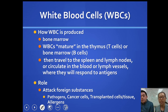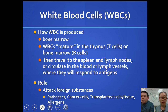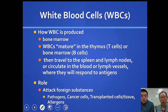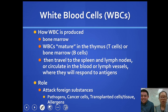White blood cells are always produced in the bone marrow, just like red blood cells, but they go through a different maturation process. B cells stay in the bone marrow to mature, while T cells mature in the thymus. After maturation, they travel to the spleen and lymph nodes, or circulate in blood and lymph vessels, looking for pathogens or bacteria to attack. Their role is to attack foreign substances — not just bacteria, but also transplanted organs, which they may treat as enemies.